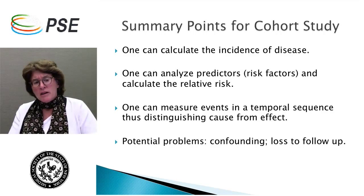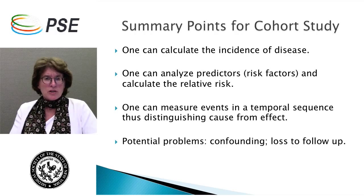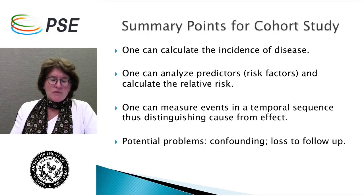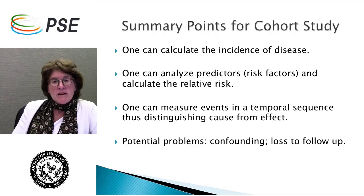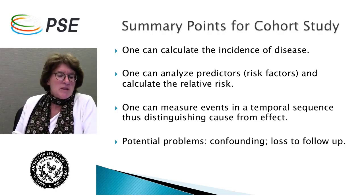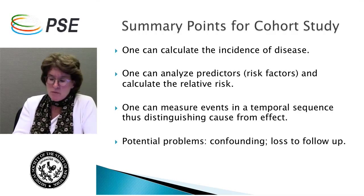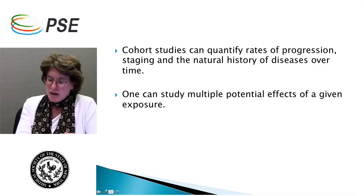With cohort studies, we can look at the incidence of disease over time, analyze predictor risk factors, and measure events in a temporal way trying to distinguish cause from effect. But there are drawbacks — you have problems with loss to follow-up. People may leave the neighborhood; you may lose track of them. There may also be other factors contributing to the disease you didn't think about — confounding factors. For example, if you didn't ask about smoking history, maybe it's not what you were thinking that caused the disease, maybe it's smoking. We can study multiple potential effects of a given exposure. Cohort studies are good but expensive, time-consuming, inefficient for rare conditions, and you need a large number of people.